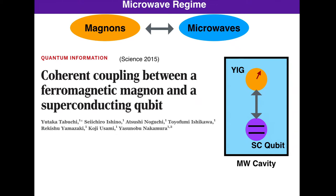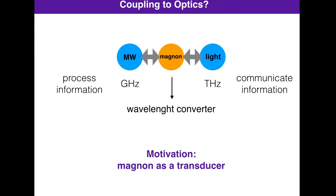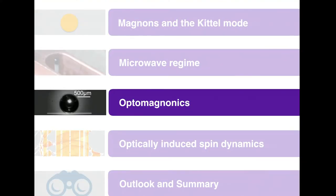This was performed three years ago in the lab of Nakamura in Tokyo and also in Hong Tang's lab at Yale. One year after, Nakamura's group showed that they can also put a superconducting qubit in the cavity, and via the microwave field, couple the qubit to these magnon excitations. This provides the first strong motivation to couple magnons to light: if we can do so, we could have a transducer of information from the microwave regime to the optical regime.